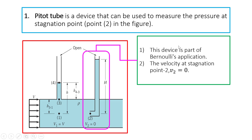Since this device is part of the Bernoulli equation, to solve problems involving the Pitot tube, you have to use the Bernoulli equation. Remember: Bernoulli equation is P1 over gamma plus V1 squared over 2G plus Z1, equal to P2 over gamma plus V2 squared over 2G plus Z2.